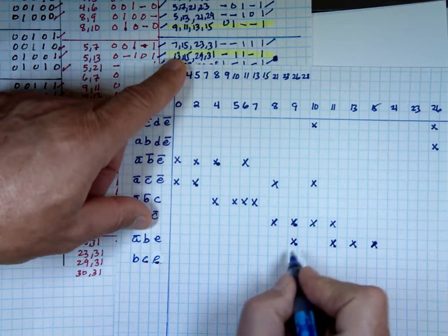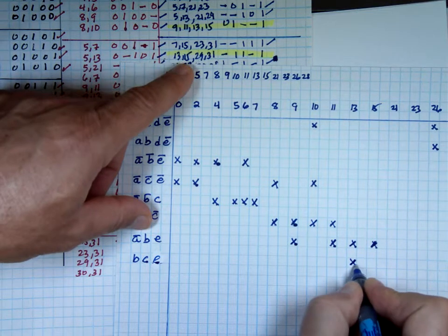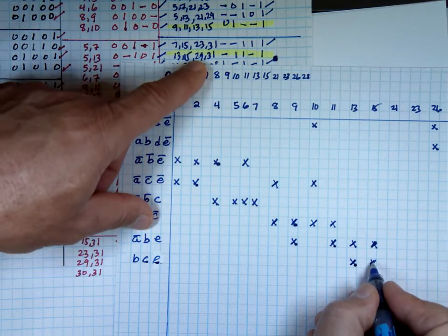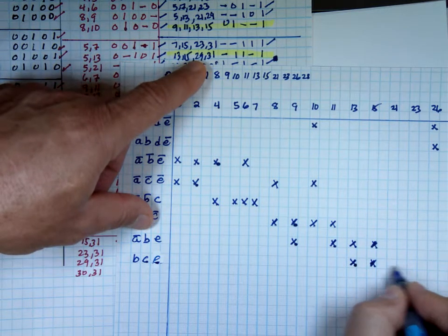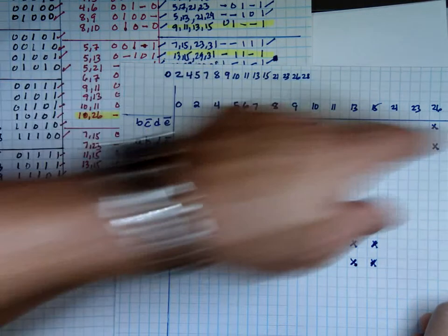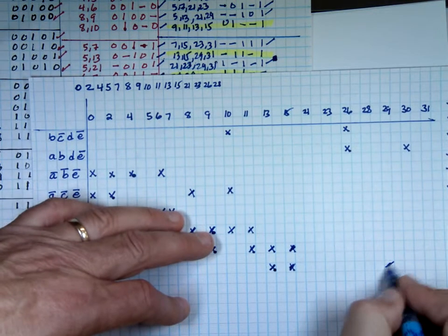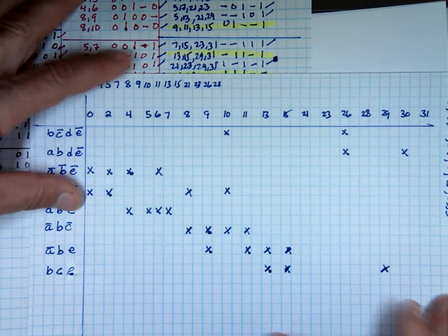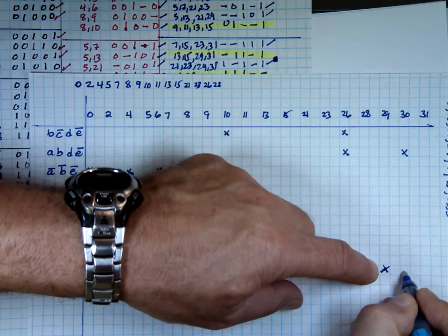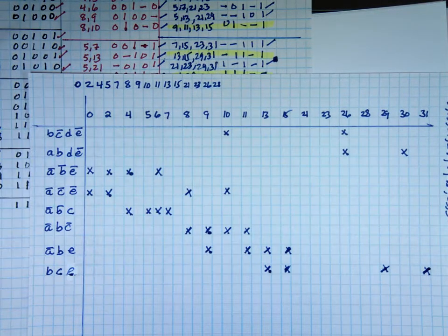Thirteen is the first one. Fifteen is the next one. Twenty-nine — somewhere here. And what comes after twenty-nine? Thirty-one, they have it? It's thirty-one.